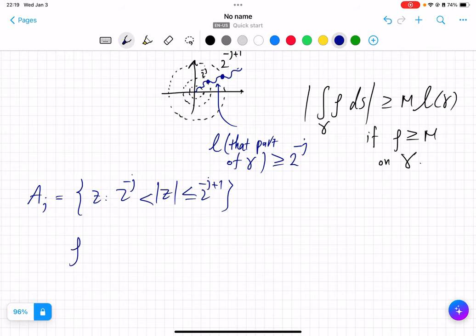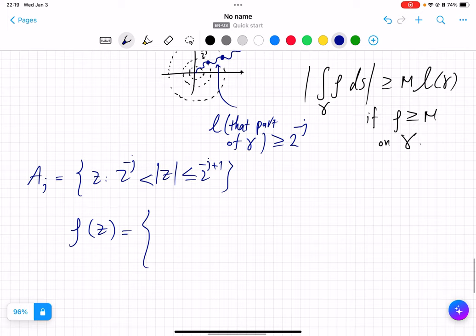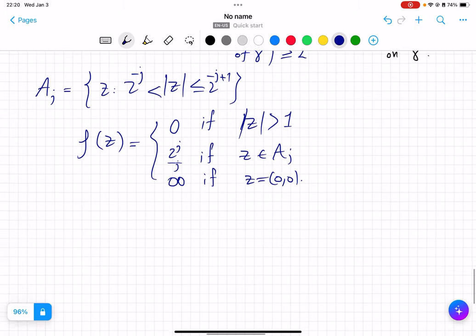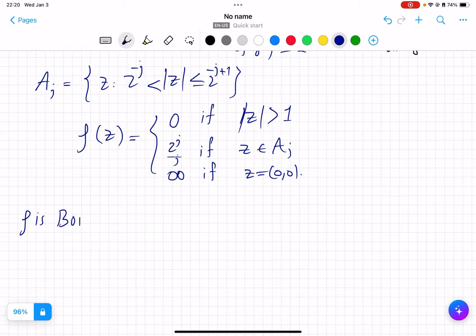Let's call this A_j to be, using complex notation, that annulus, so 2^{-j+1} bigger than 2^{-j}. And then we define our ρ by the following formulas: so it's zero if |z| is strictly bigger than 1, and it is equal to 2^j divided by j if z belongs to this A_j, and it's infinity if z is just the origin.